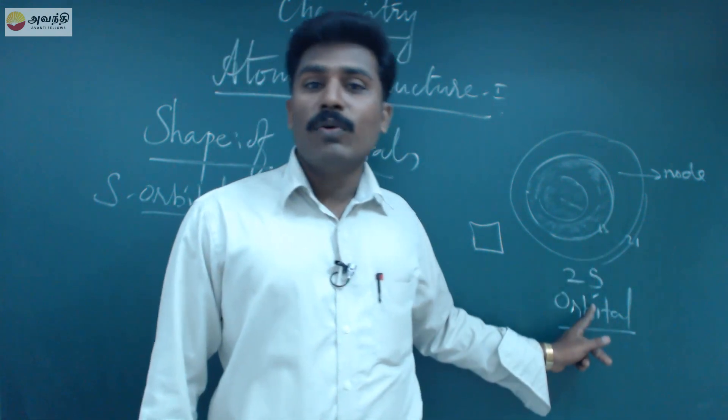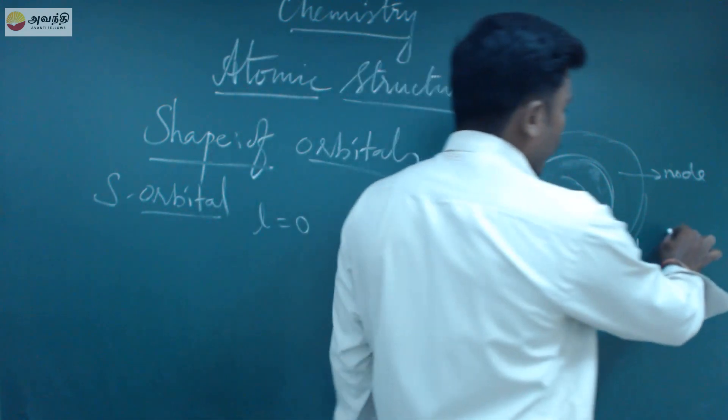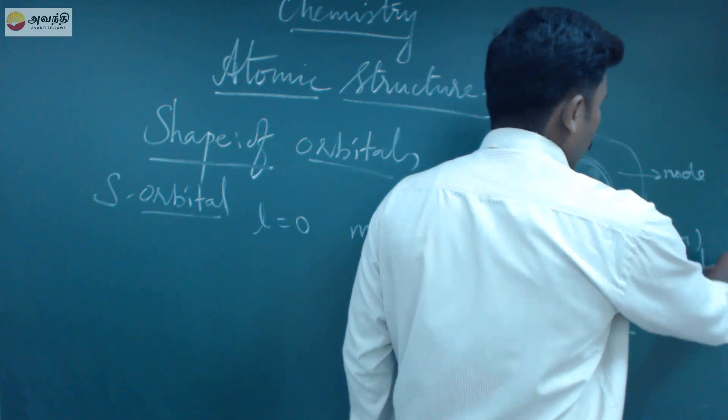For a 2s orbital there is a node. There is a formula for this, which is the n minus 1 rule.